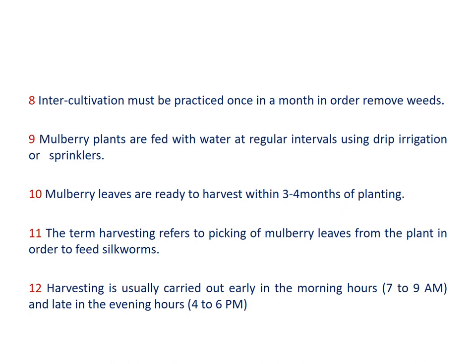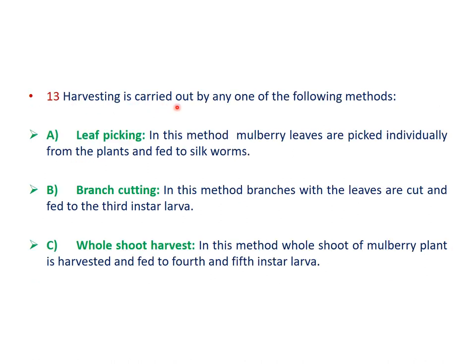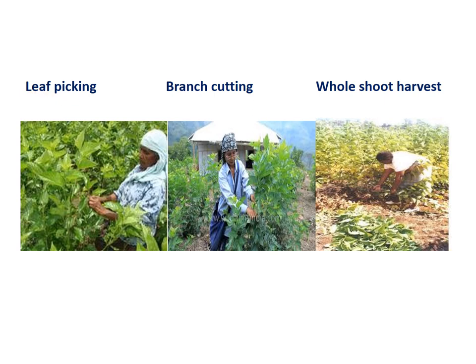Mulberry plants are watered at regular intervals using modern techniques like drip irrigation or sprinklers. Mulberry leaves are ready to harvest within 3 to 4 months of planting. Harvesting refers to the picking of mulberry leaves to feed the silkworms, carried out between 7 to 9 a.m. and 4 to 6 p.m. Harvesting is done by three methods: leaf picking — leaves are picked individually; branch cutting — branches with leaves are cut and fed to 3rd instar larvae; and whole shoot harvest — the whole shoot is harvested and fed to 4th and 5th instar larvae.